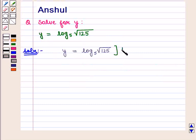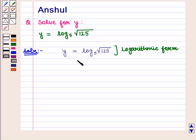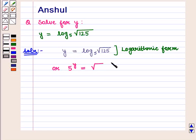This is the logarithmic form of the equation, and using this key idea we can transform this logarithmic form into exponential form. It can be written as 5 raised to power y is equal to square root of 125.